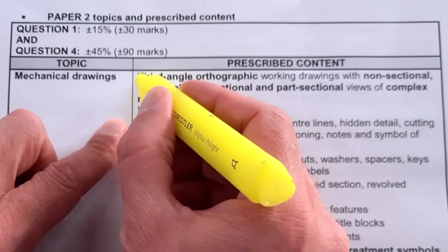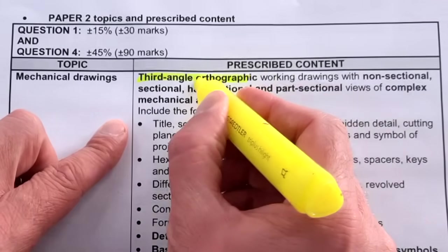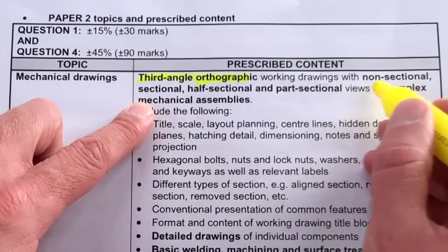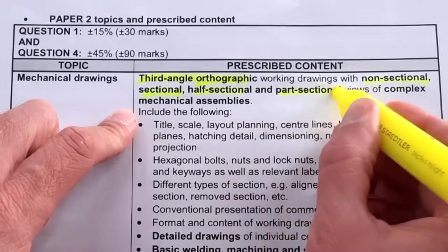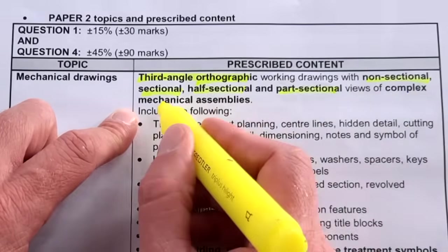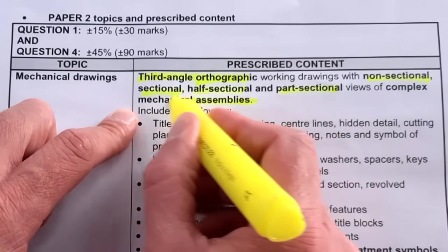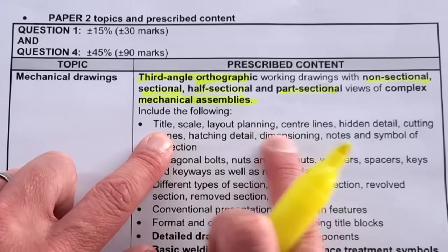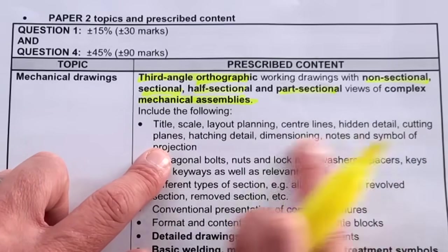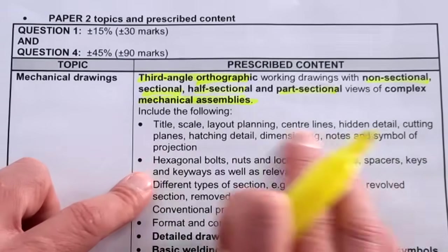30 marks for the analytical and 90 marks for the actual assembly that you'll do. Let's look at some of the key things. The first thing is this will be in third-angle orthographic projection - working drawings with non-sectional, sectional, half sectional, and partial sectional views of complex mechanical assemblies. That's important.